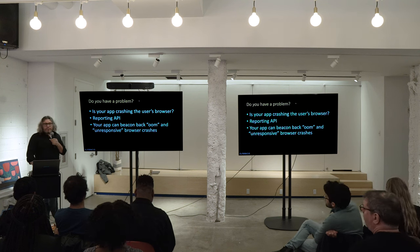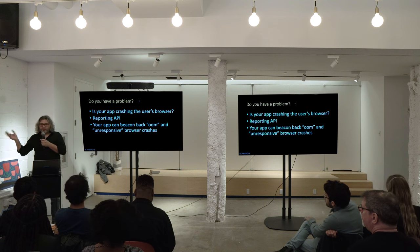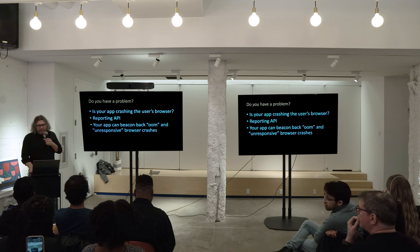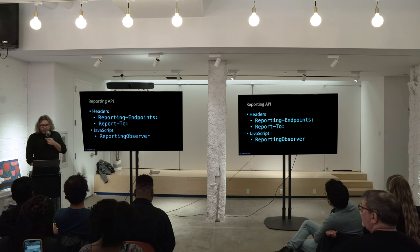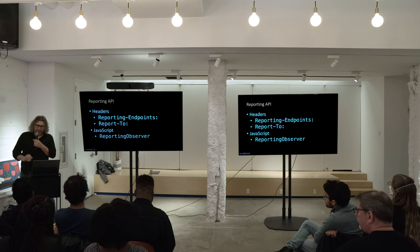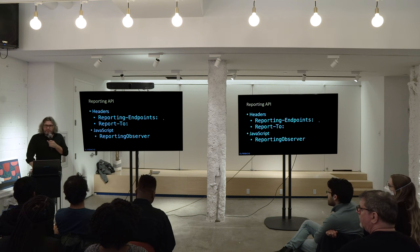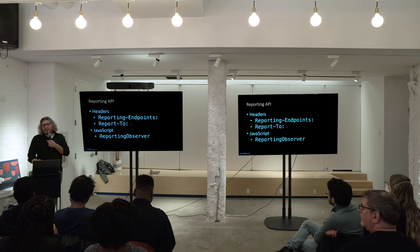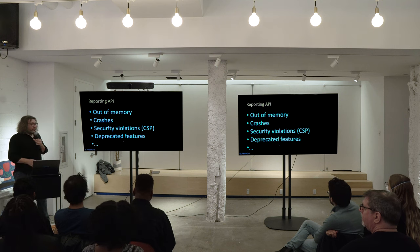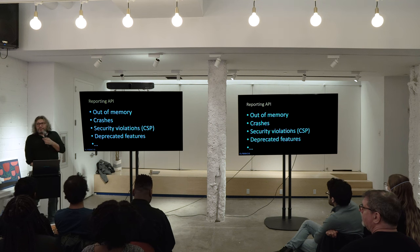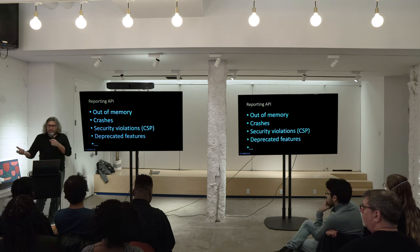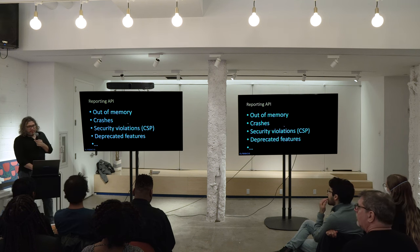The Reporting API allows you to specify a URL where the browser can send you information if there's a crash. You just have to specify reporting endpoints, because it can send information about different things that are happening. You can specify different endpoints for every event you're interested in, and Report-To is kind of the older version for older browsers. There's also a JavaScript API.